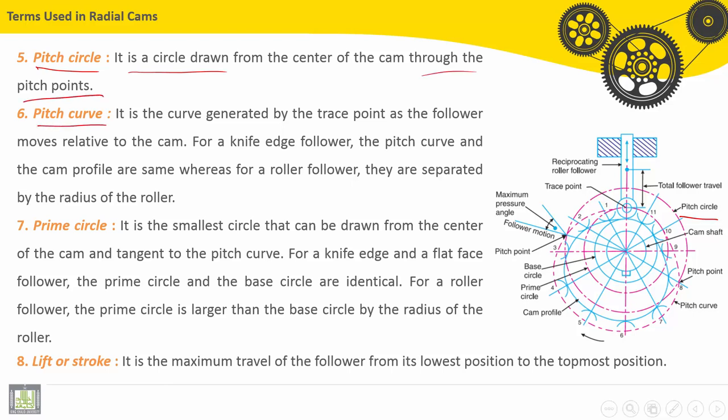Now with the pitch curve, here we have the pitch curve on the graph. It is the curve generated by the trace point as the follower moves relative to the cam. For a knife edge follower, the pitch curve and the cam profile are the same whereas for the roller follower, they are separated by radius of the roller.